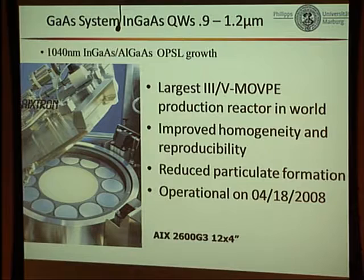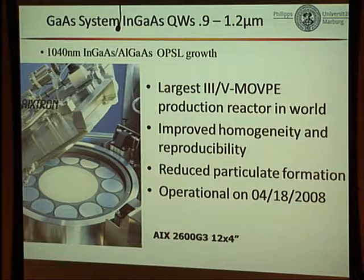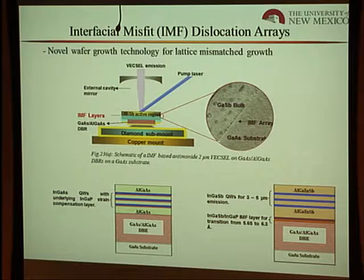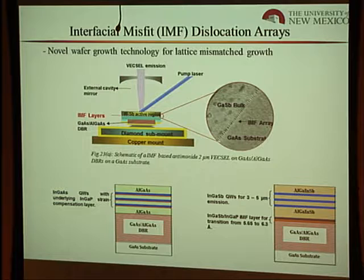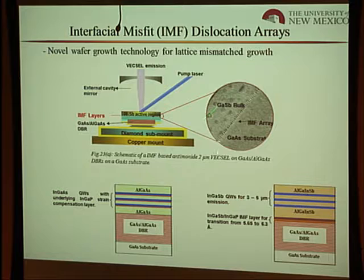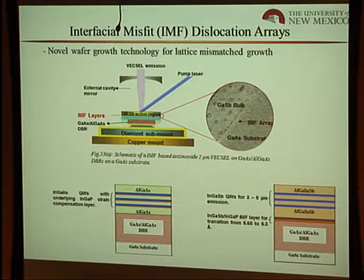The University of Marburg uses a full production reactor growing 12 four-inch wafers simultaneously. UNM grows mid-IR gallium antimonide structures using an interesting growth mode called interfacial misfit dislocation arrays — IMF — which allows very strong lattice mismatch growth across a single atomic layer. This addresses the constraint that substrate lattice constant must closely match whatever is grown on it. We did grow a mid-IR VECSEL structure using this layer; there were issues, but we got a record pulsed output from that device.